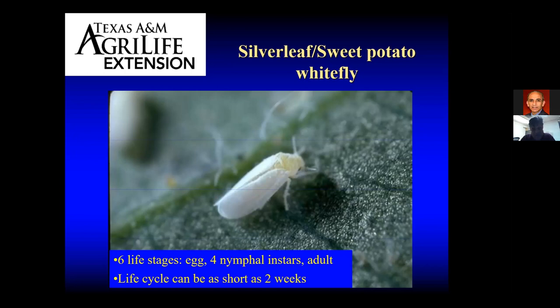These guys can really reproduce quickly if conditions are right. They can go from egg to adult in two weeks — so in 14 days you went from an egg to an adult. As you can quickly see, under the right conditions you can have many, many whiteflies, and it takes very few whiteflies to transmit the virus. Once the virus is present in other tomatoes or in the weeds near your garden, they could be carrying it.